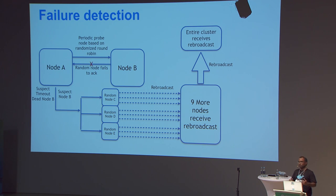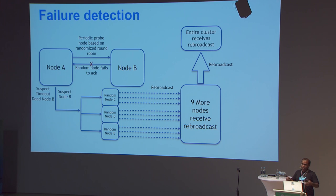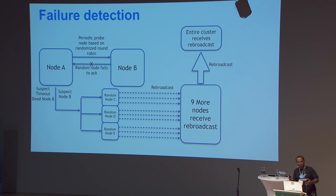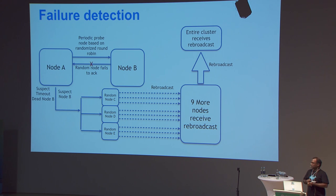Once the node is removed from the cluster, all state learned from that node disappears. This is fundamentally how node failure detection influences state — it includes all routing information learned from the node, all load balancing information, and all service discovery information learned from that node. All of those things disappear when the node actually goes dead.